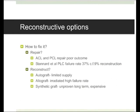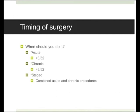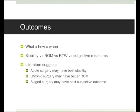The question of when to do reconstruction — acute, chronic, or staged — doesn't have a clear answer. By the time you multiply the permutations of what to fix, how to fix it, and when to fix it, each group is so small that there's no good evidence to guide us. A meta-analysis looking at outcomes of acute versus chronic versus staged surgery suggested that acute surgery is probably most stable, chronic probably has the best range of motion, and staged surgery probably has the best subjective outcome but falls somewhere in between.